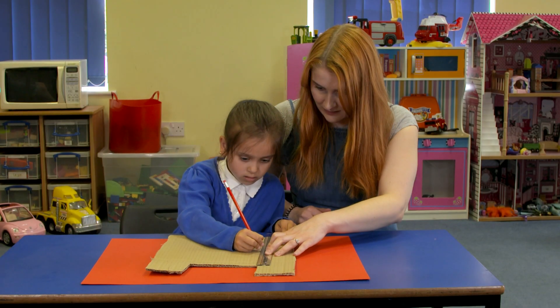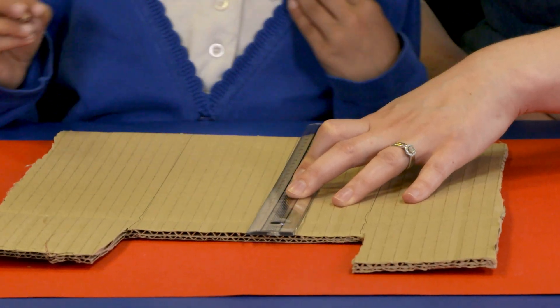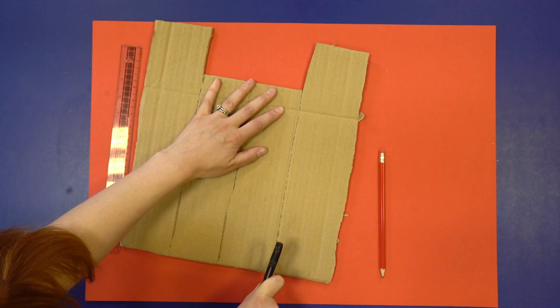Mark out four columns on a piece of cardboard. Ask a grown-up to score down the lines using scissors.